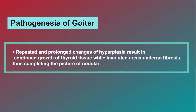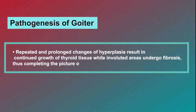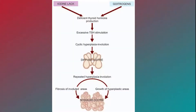Repeated and prolonged changes of hyperplasia result in continued growth of thyroid tissue, while involuted areas undergo fibrosis, thus completing the picture of nodular goiter, as shown in this photo which illustrates the pathogenesis of simple and nodular goiter.